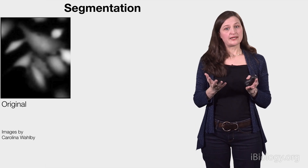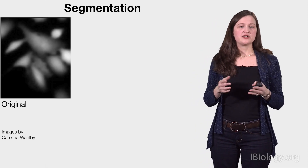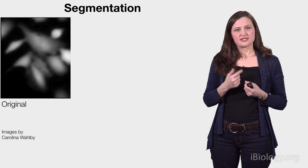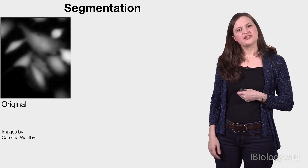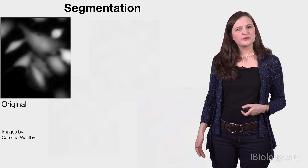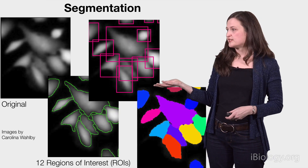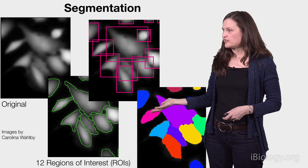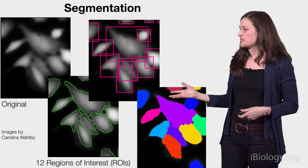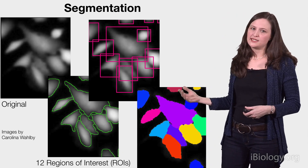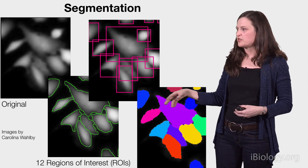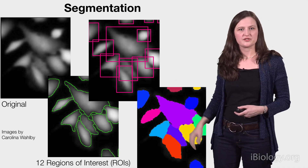Segmentation gets its name from segmenting, or dividing the pixels in the image, into regions of interest, otherwise called ROIs, such as individual cells, as shown here. In some software, this step may be called segmentation, but it could also be called identification or object detection. The regions of interest can be shown using outlines or bounding boxes, or as arbitrarily colored collections of pixels known as the label matrix, because each separate entity is given a different numeric label. You don't see the numeric labels directly, but you see them indirectly, as reflected in the colors that are shown.